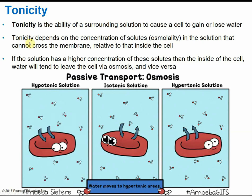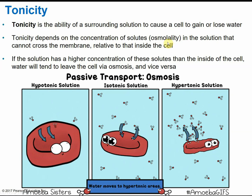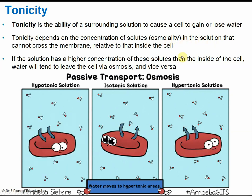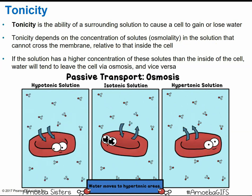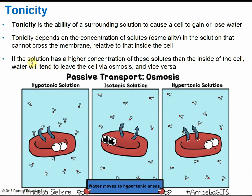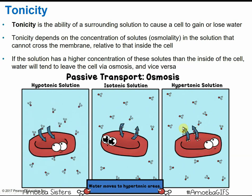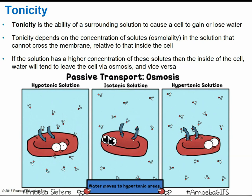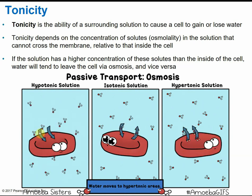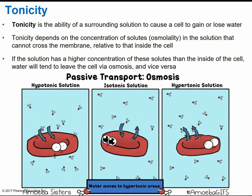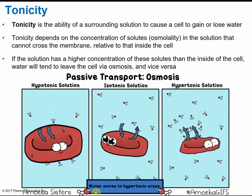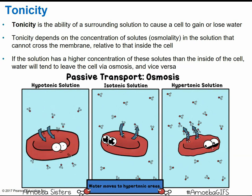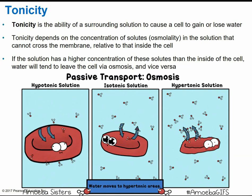Tonicity depends on the concentration of solutes, or the osmolality, relative to what's inside the cell. Our cells maintain homeostasis at a standard range of tonicity. If the solution has a higher concentration of solutes, water will leave the cell via osmosis. If the solution has a lower concentration than what's inside the cell, water will rush into the cell via osmosis and cause it to swell. Water always wants to move to the more concentrated area to dilute that concentrated solution and reach equilibrium.